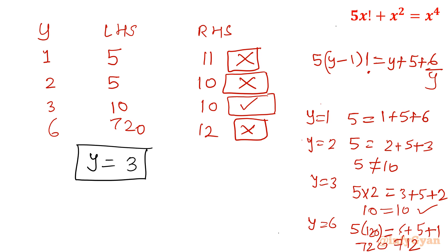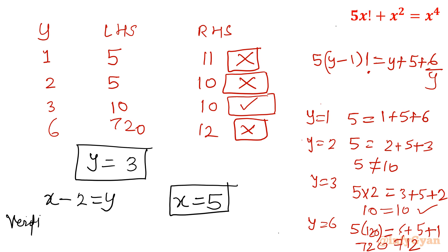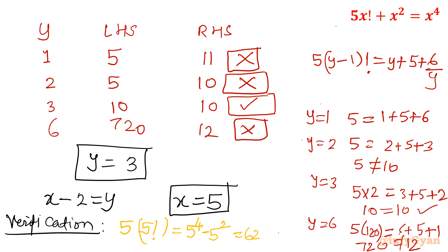Back-substituting y = 3 into x - 2 = y gives x = 5. Let's verify: LHS = 5·5! = 5·120 = 600; RHS = 5⁴ - 5² = 625 - 25 = 600. Both sides equal 600, so x = 5 is verified as the true solution.